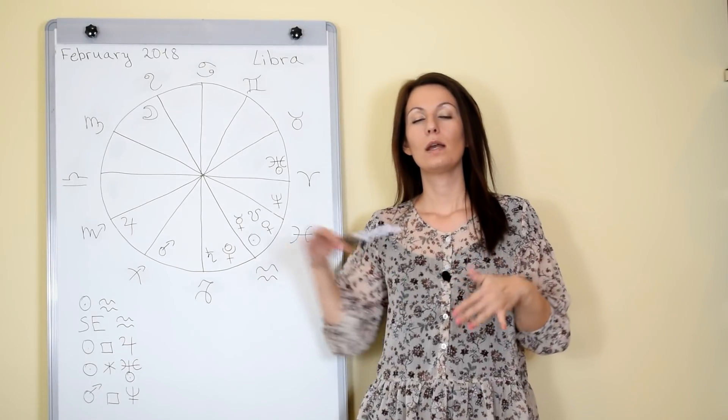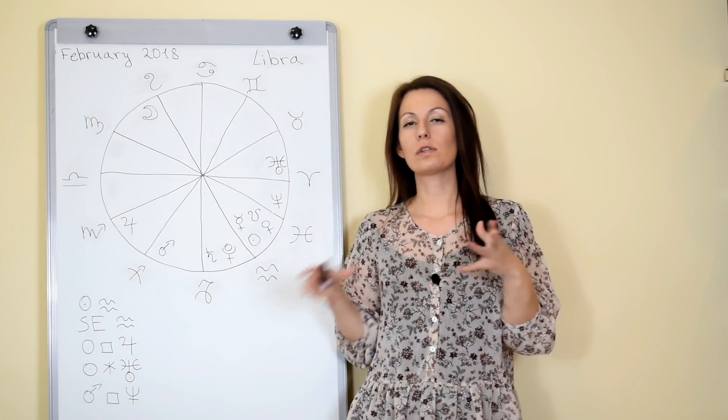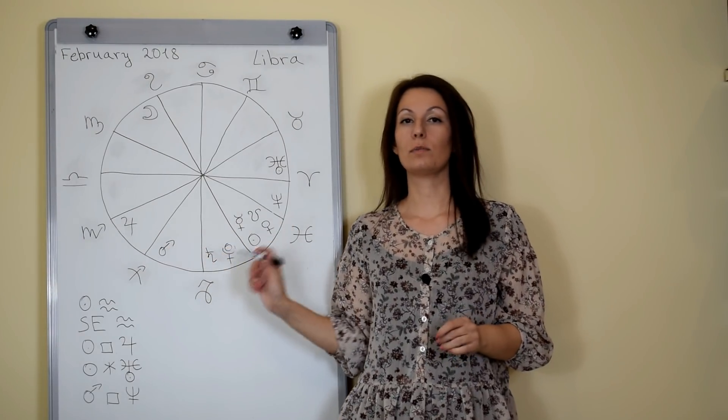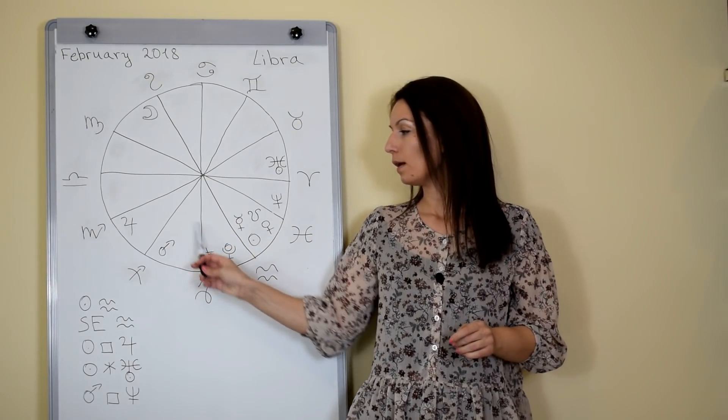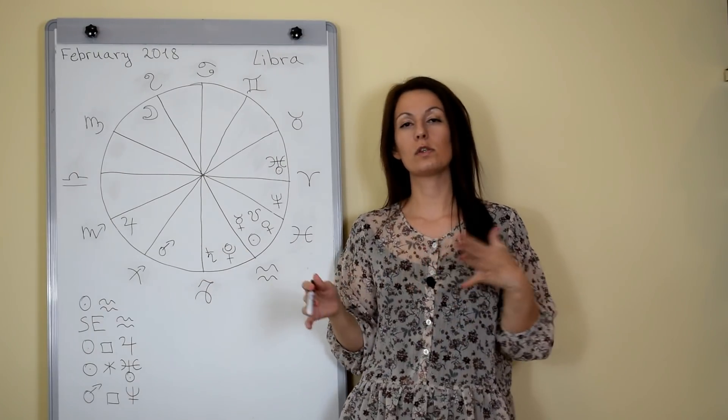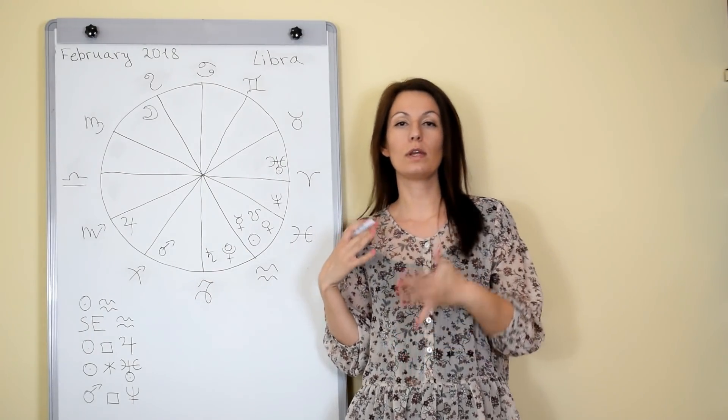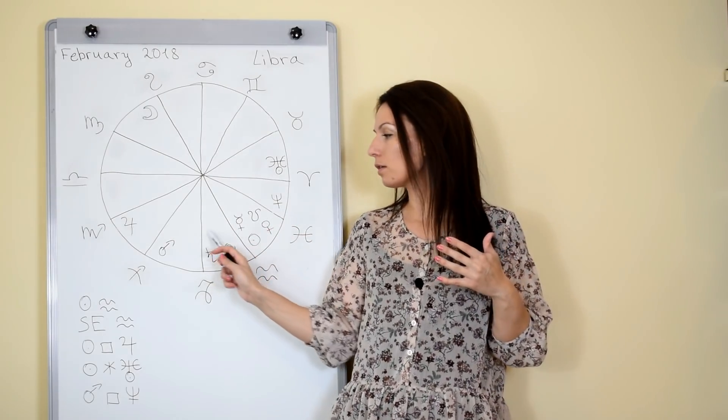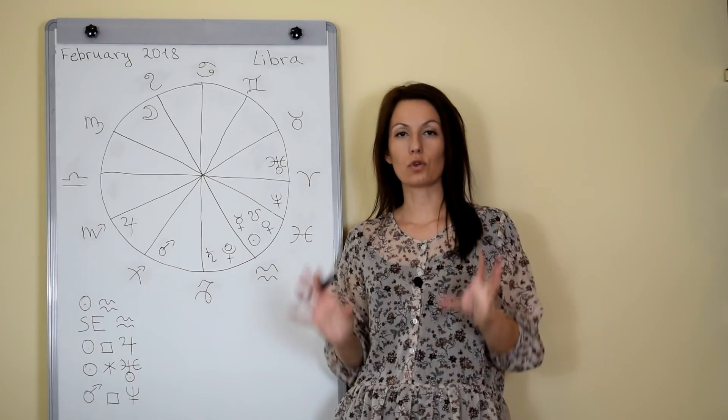Also if you're driving you have to be careful. Third house and Mars here could be related to possible accidents or maybe you can forget something or maybe something might happen with your car. So generally you have to be careful while traveling.